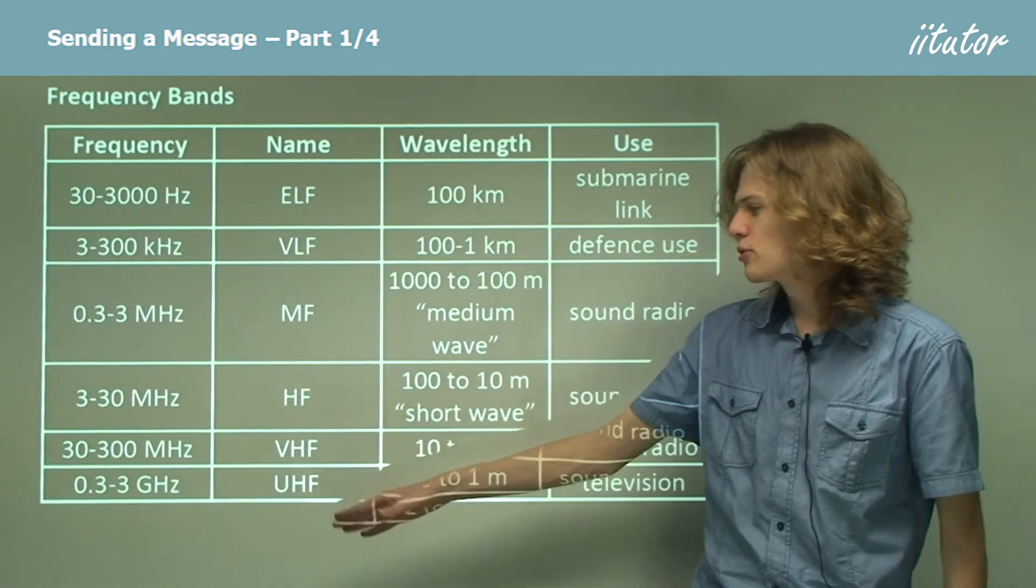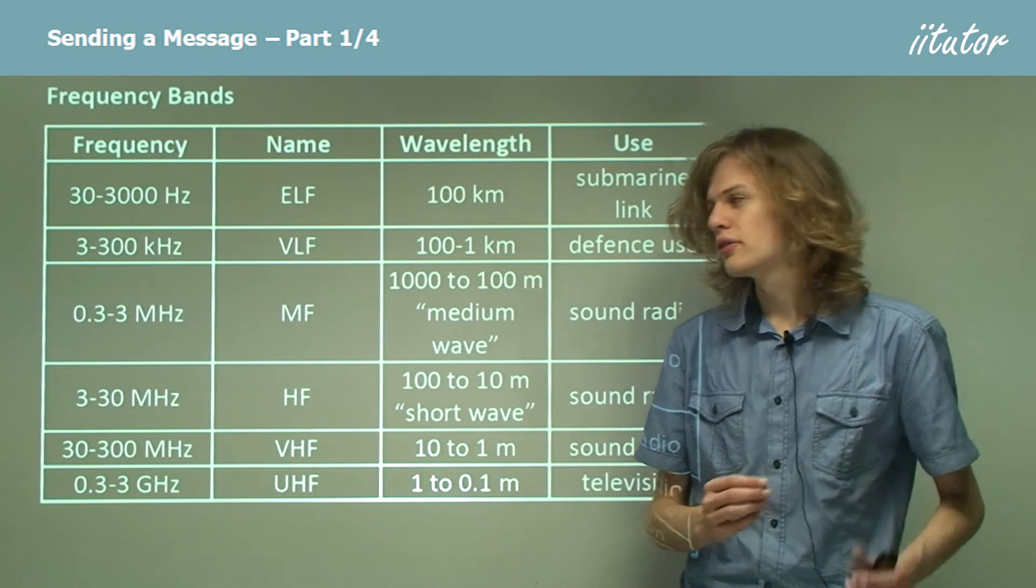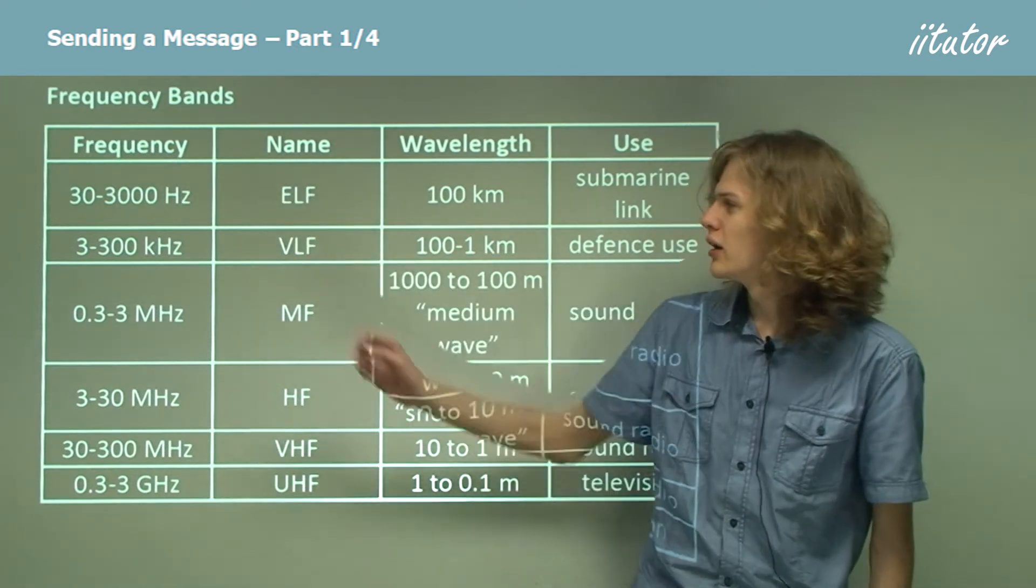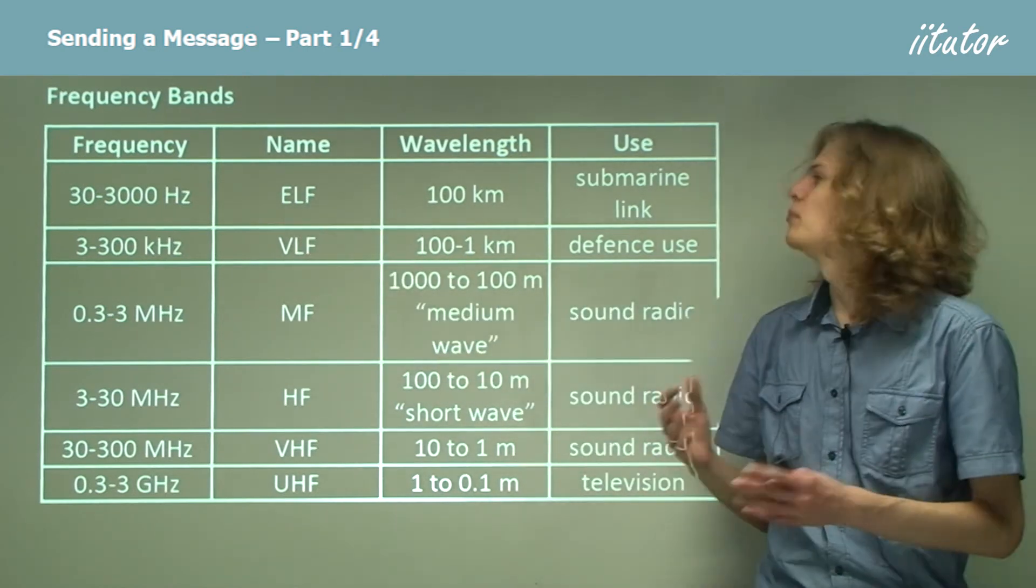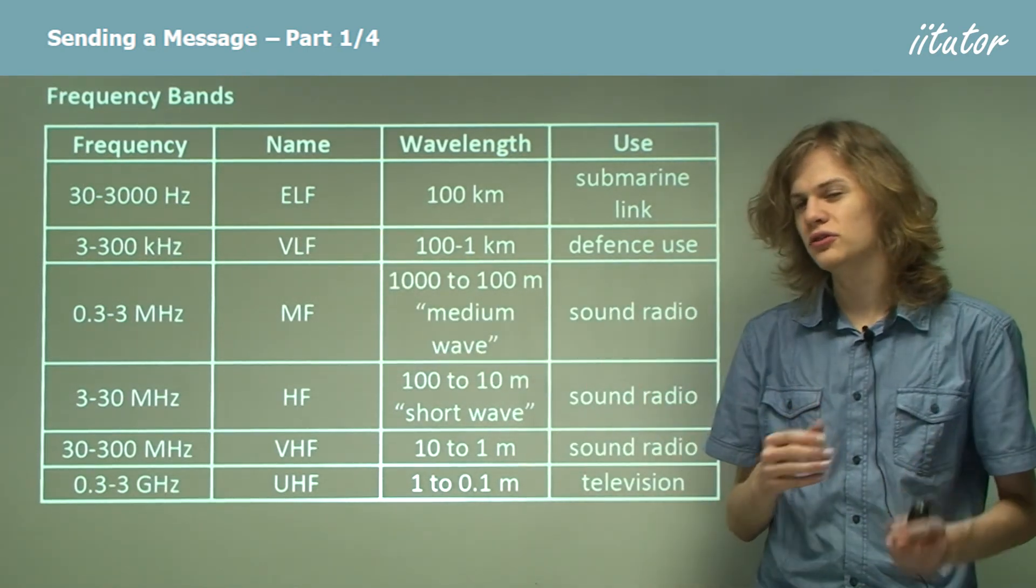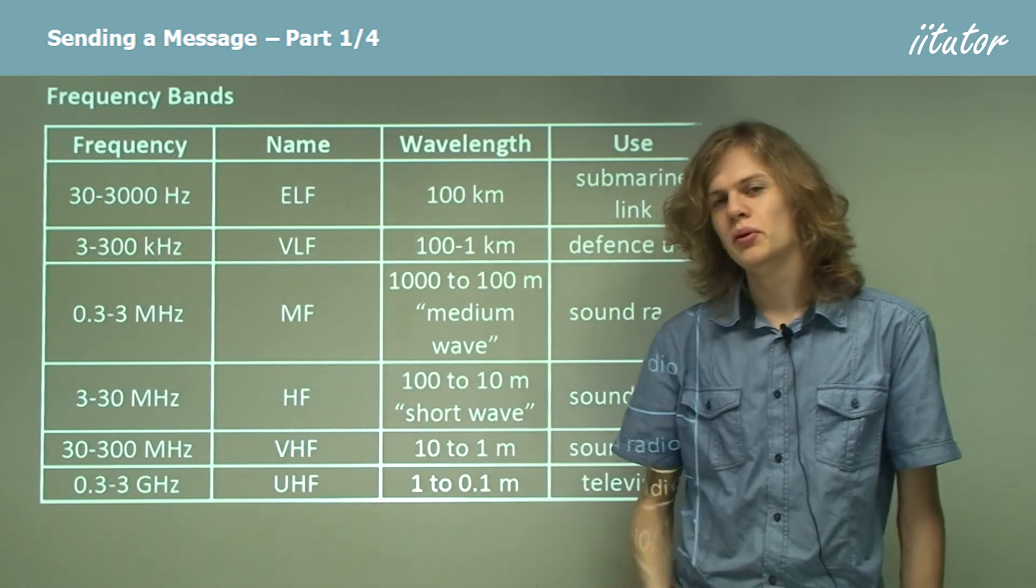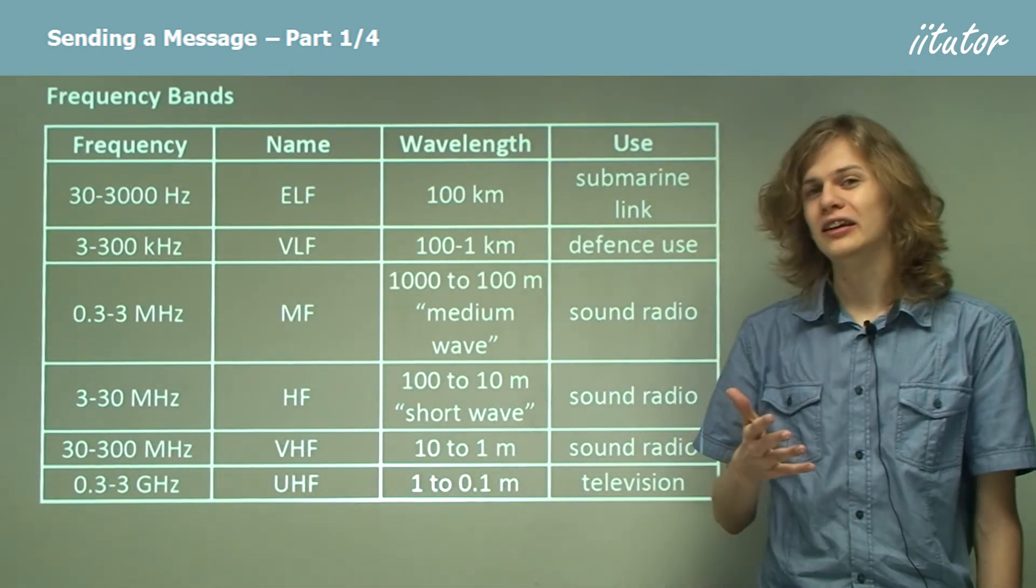Between 0.3 and 3 gigahertz, there's a lot more bandwidth than for example, between 30 and 3000. Here we have a bandwidth of about 2970 hertz. At the bottom, we're working in gigahertz. Remember that 1 gigahertz is 1 billion hertz.